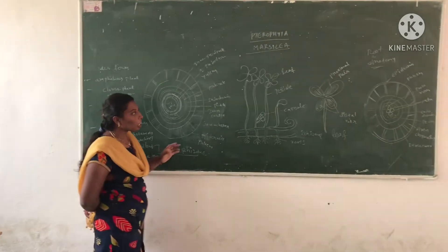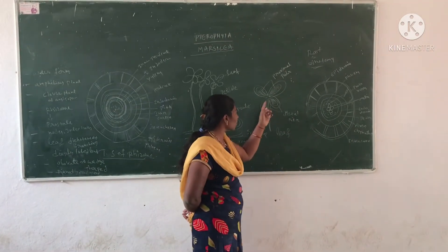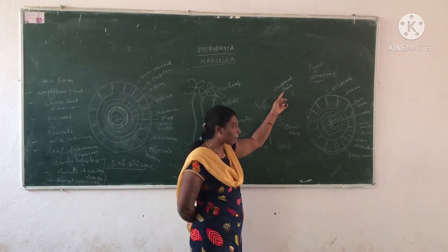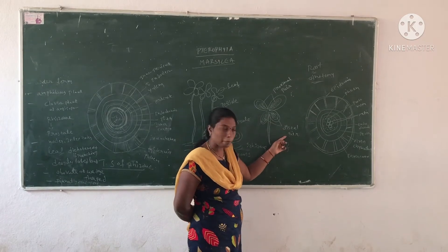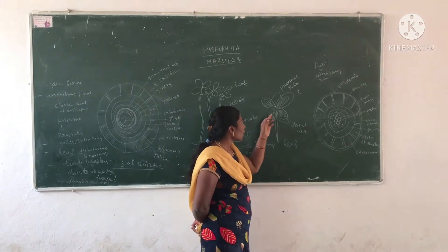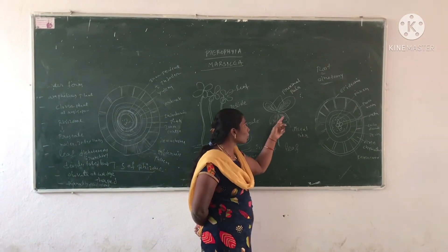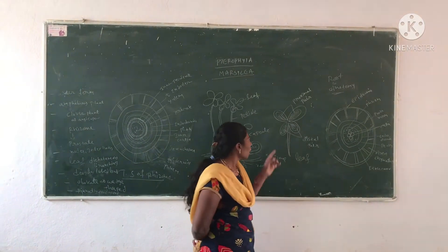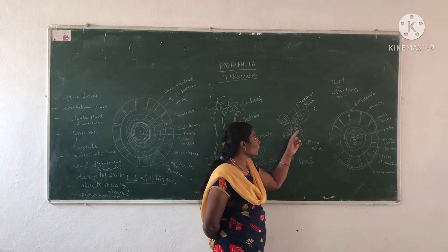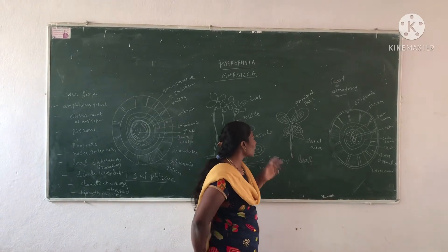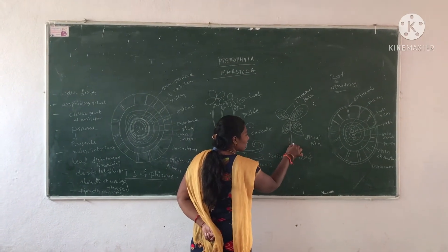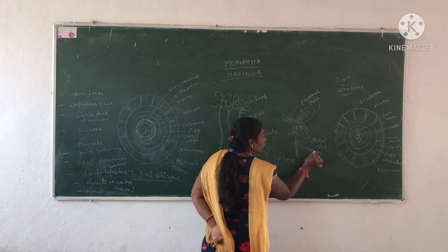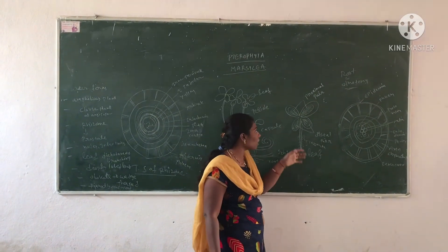The leaves are pinnately compound. Observe the circinate leaf structure — this is a vernation condition. The leaves show four lobes: the upper two lobes are called distal lobes and the lower lobes are called proximal lobes, which are very close to the petiole. The leaves show dichotomous venation branching. The petiole is totally covered with hair-like structures called ramenta — this is another special character of Marsilea.